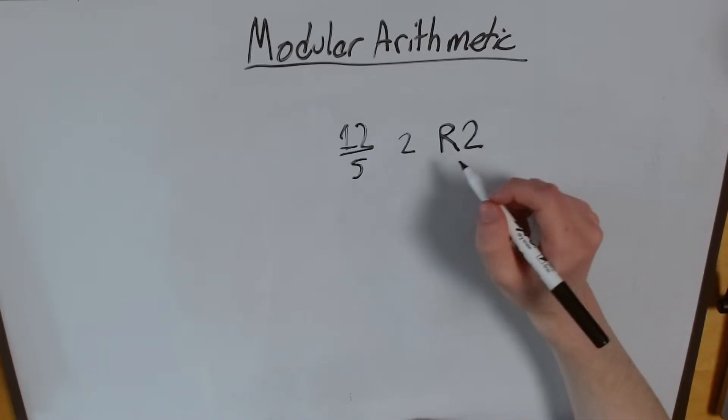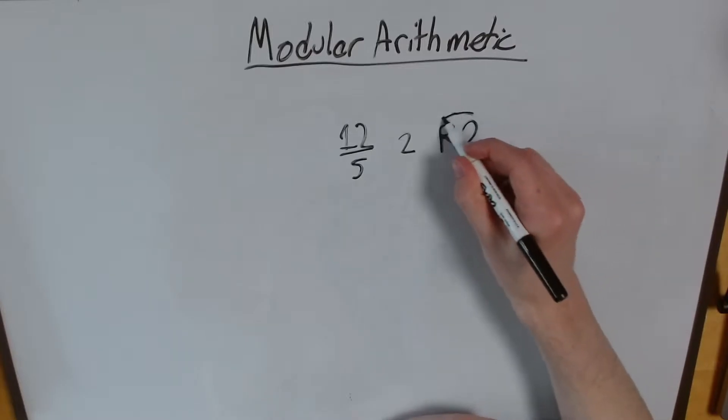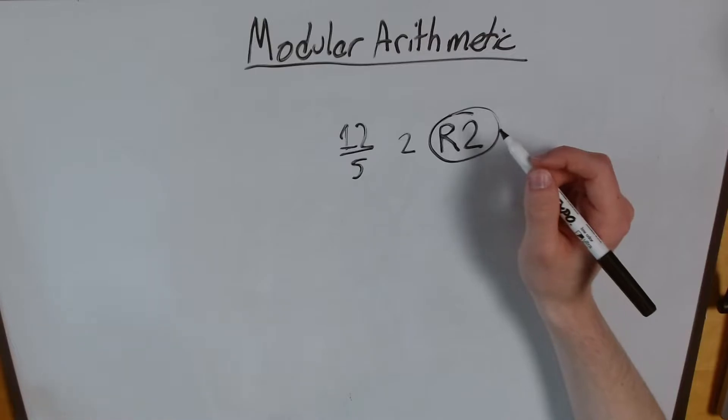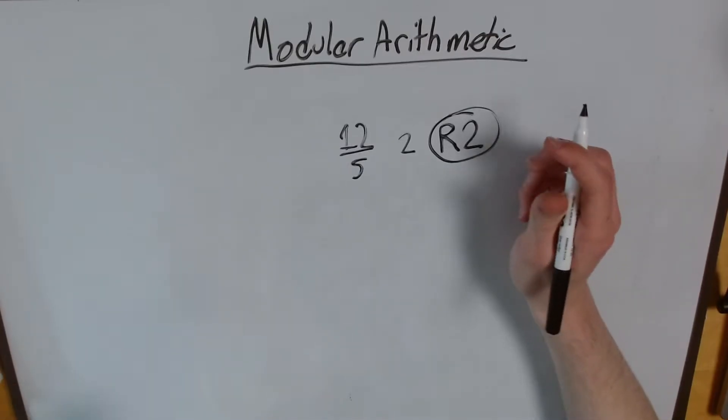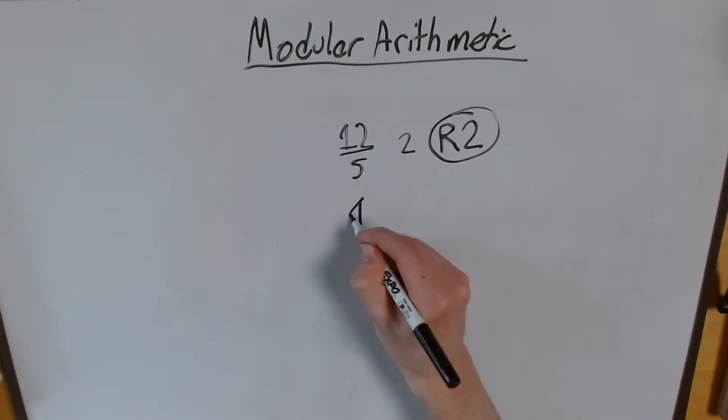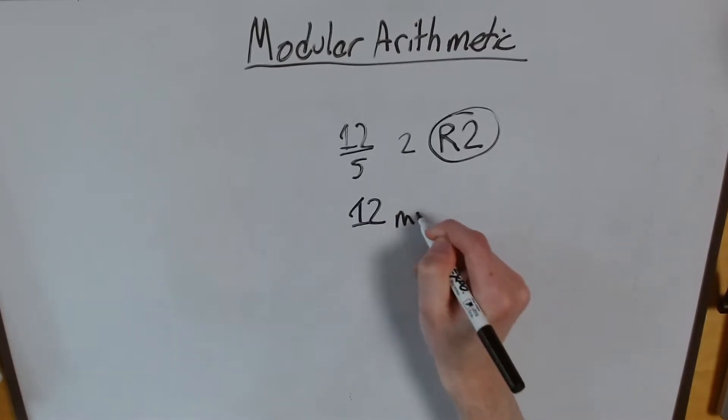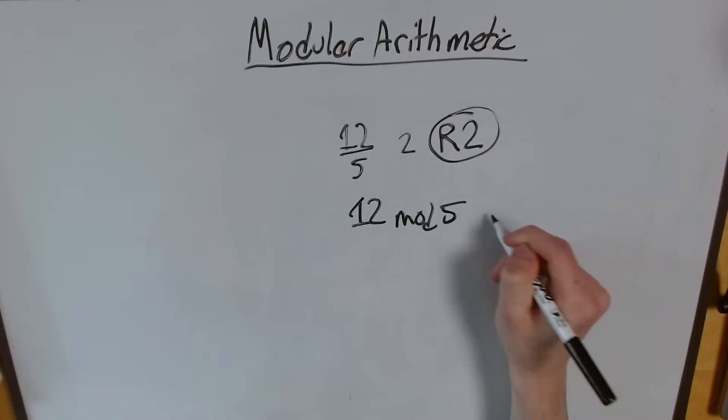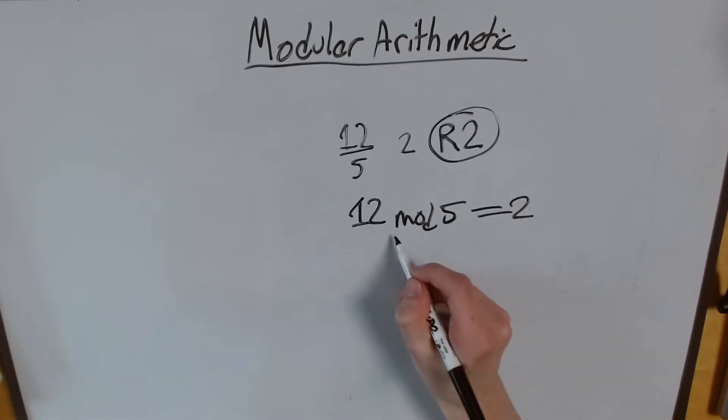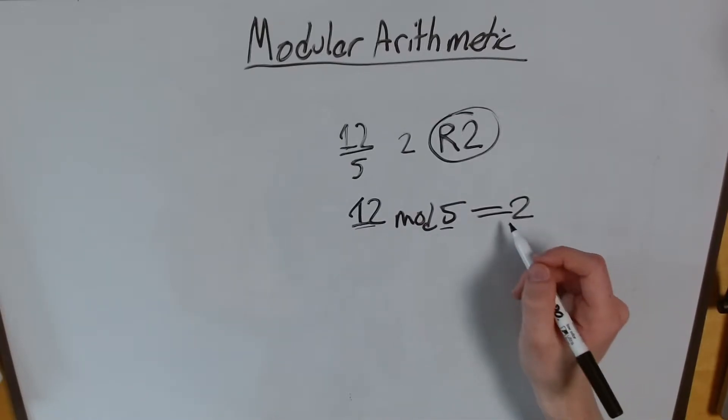In this case, modular arithmetic focuses on this remainder. And to write it out in the style of modular arithmetic, we'd say 12 mod 5 equals 2. What this means is, the remainder of 12 divided by 5 is 2.